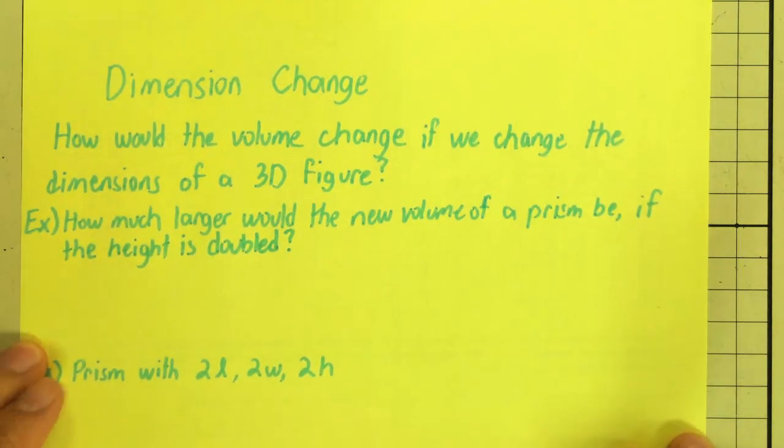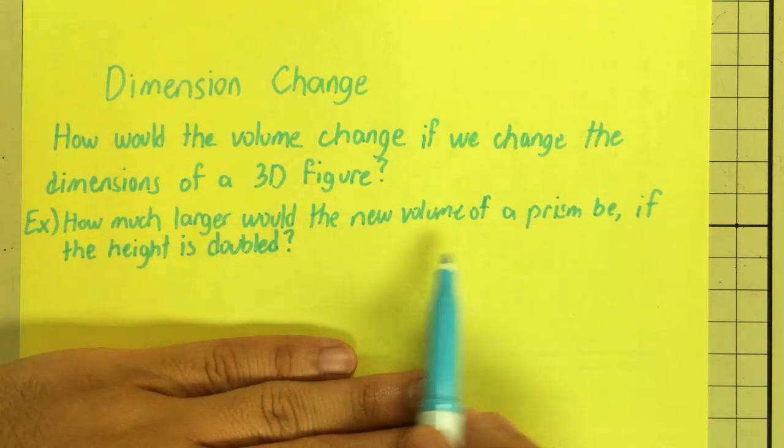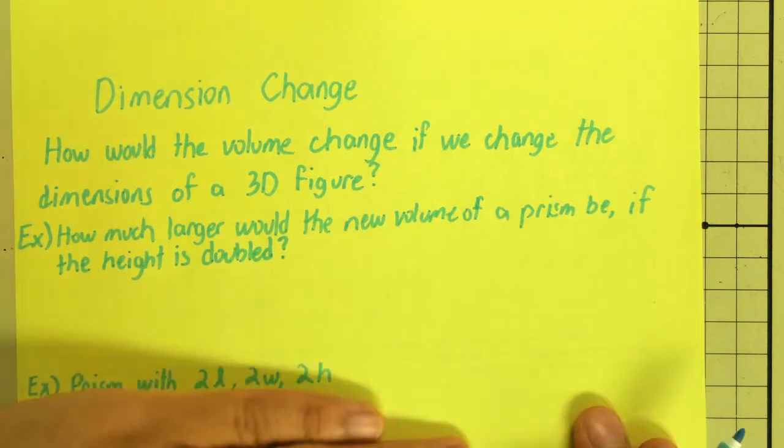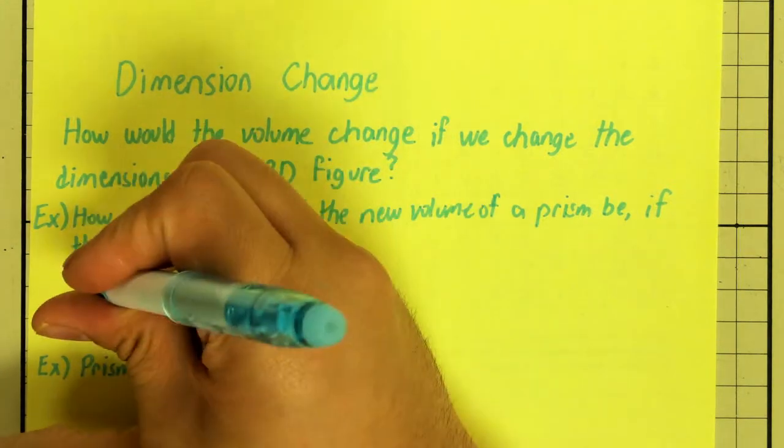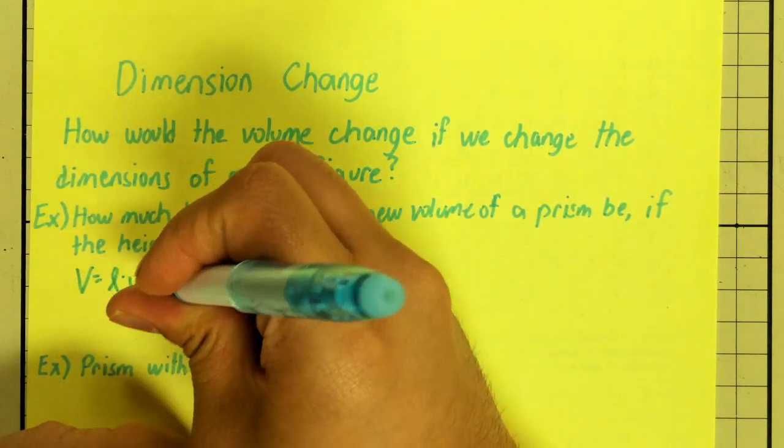So, here we go, I have my first example over here. How much larger would the new volume of a prism be if the height is doubled? We tackle dimension change by looking at the formulas for volume.